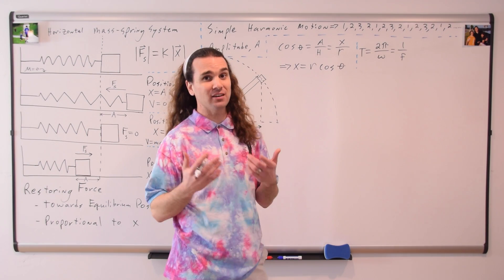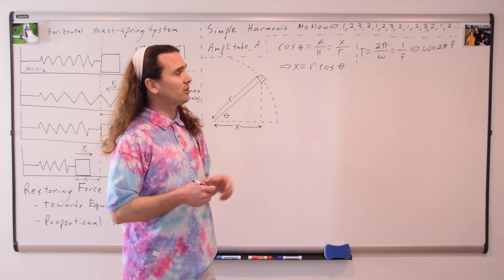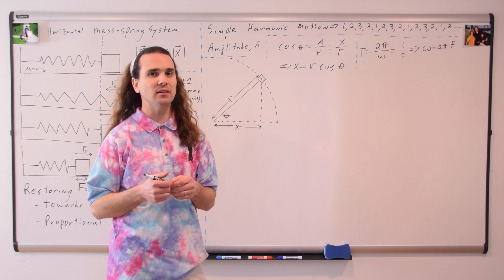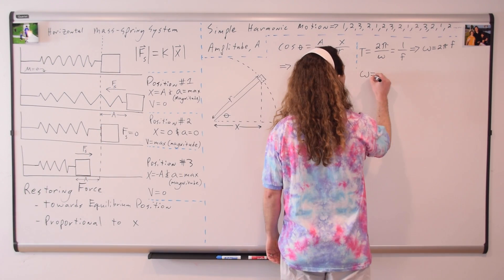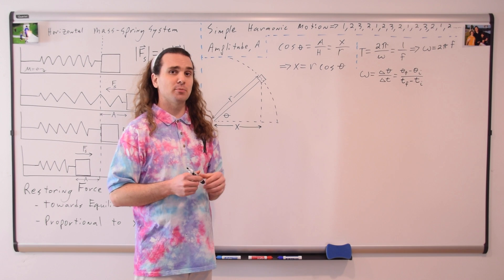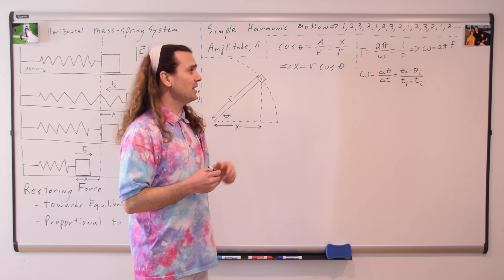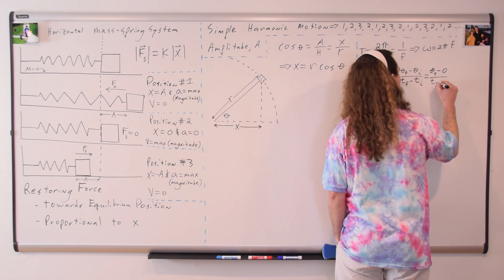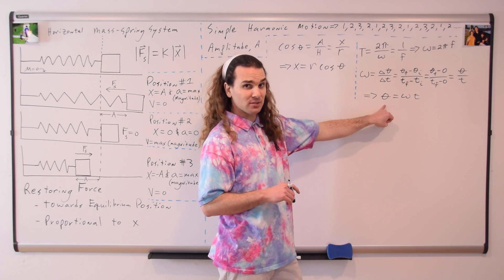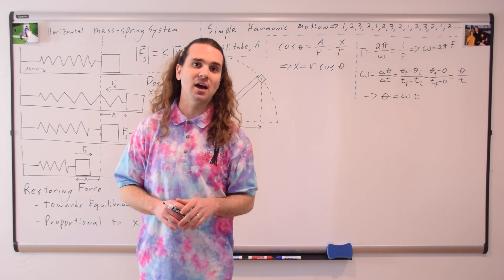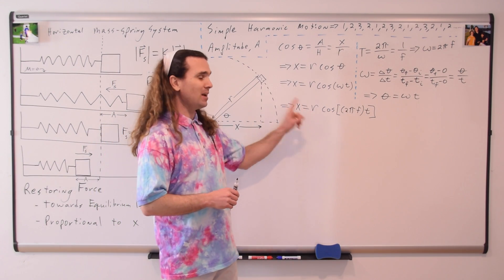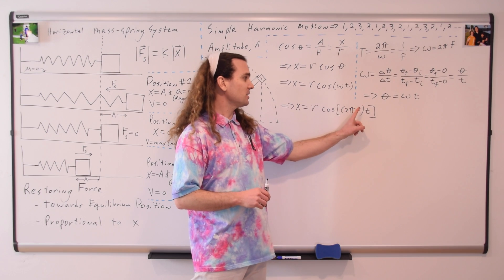We can use the equation for period in terms of frequency and angular velocity that's on your equation sheet. Multiplying this equation by angular velocity and frequency, we get the angular velocity equals two pi times the frequency. This omega is called the angular frequency. Using the equation for angular velocity — angular velocity equals angular displacement over change in time — and setting our initial conditions equal to zero, we get angular position equals angular velocity, or angular frequency, times time. Combining all these equations gives us the x-position of the particle equals the radius times the cosine of the quantity two pi times frequency times time.